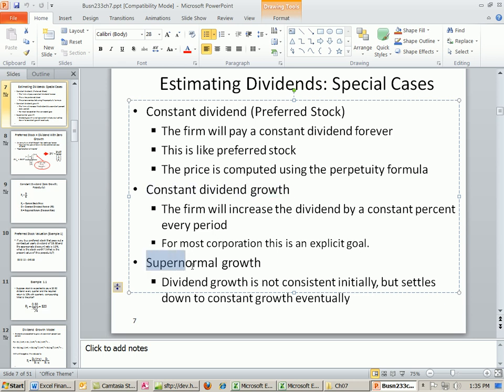And finally, supernormal growth. That just means you increase in some abnormal pattern, but then at some point in the future, you steady off, and then you grow at a constant rate. So in our next three videos, we'll see the math models for these.